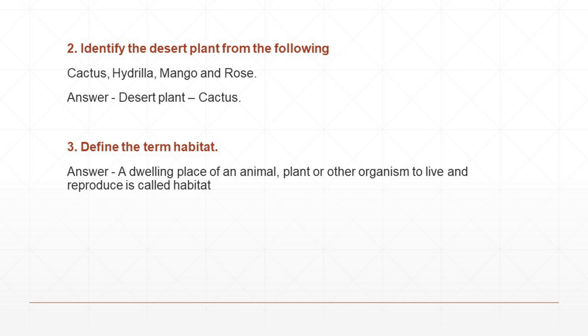Third question: Define the term habitat. Answer: A dwelling place of an animal, plant or other organism to live and reproduce is called habitat. The word 'term' means word. 'Dwelling' means living — the place where that organism, animal or plant lives is called its dwelling place.